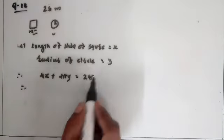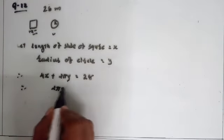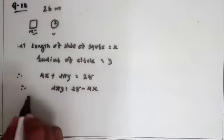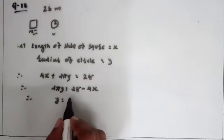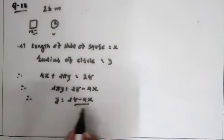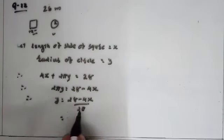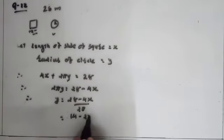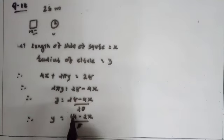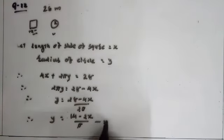Rearranging: 2πy = 28 − 4x. Therefore y = (28 − 4x) / 2π = (14 − 2x) / π. Take this as result number 1.